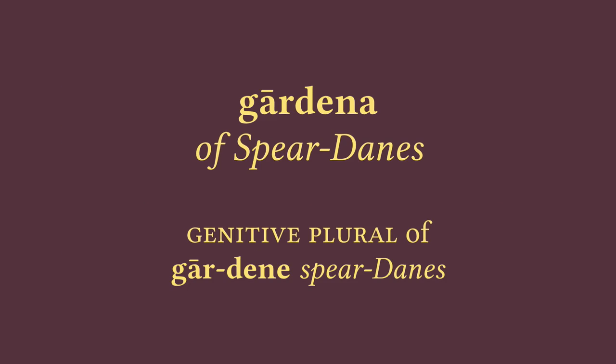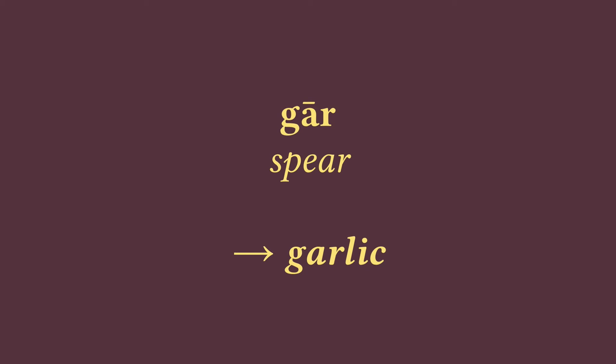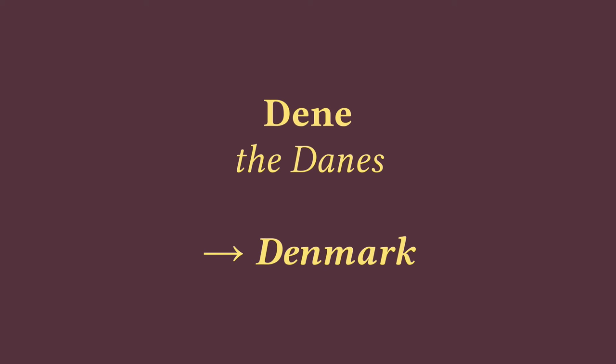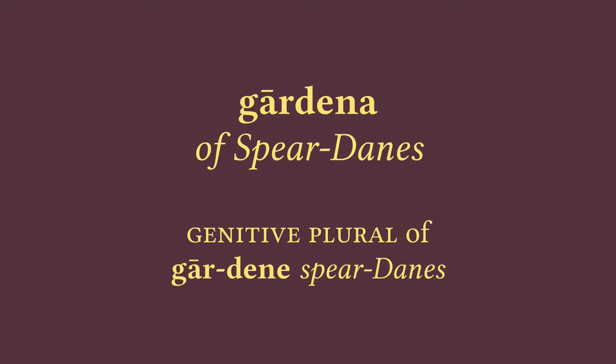Next up is 'Gārdena.' This is a compound word composed of 'gār,' which means 'spear,' and 'dene,' which means 'the Danes.' Gār, meaning spear, is a word we've lost in Modern English, at least on its own — but it does survive in another word: 'garlic,' which was originally a compound word meaning 'spear-leek.' Dene is familiar enough from the word 'Denmark,' meaning 'the Danes' mark,' an archaic word meaning border or land. Interestingly, the Modern English word 'Dane' seems to come not from the Old English 'dene,' but from the Old Norse equivalent. So together, 'Gārdene' are the Spear-Danes — just one of many names the Danes are given throughout Beowulf.